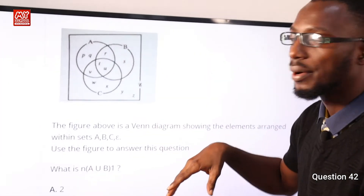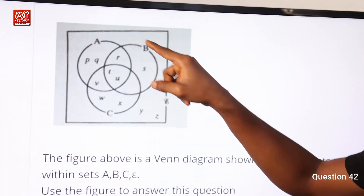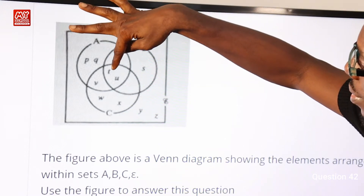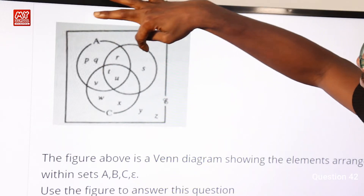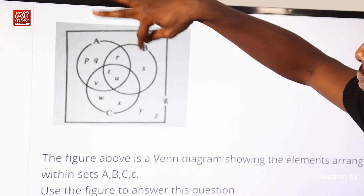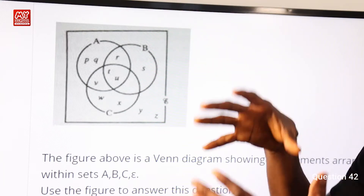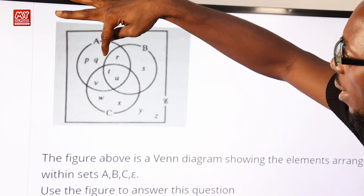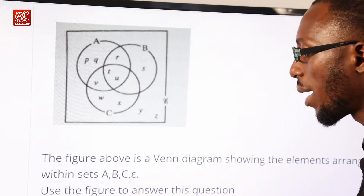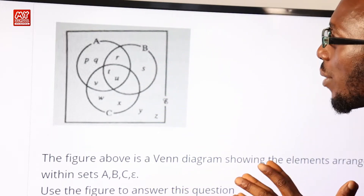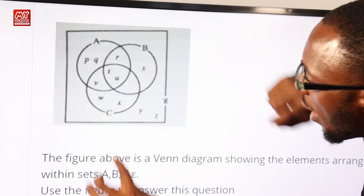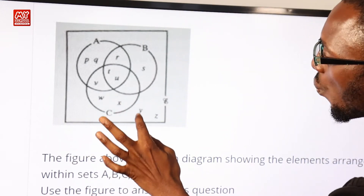Looking at the Venn diagram, A union B together contains P, Q, R, S, T, U, V. The complement of A union B means the elements not found when you bring A and B together. Those elements are W, X, Y, Z — elements not found in A union B but present in the universal set.